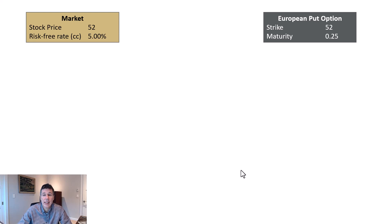The stock price in this market is 52. The risk-free interest rate is 5%, and we're going to try to price a European put option. The strike on the option is 52. The maturity is a quarter of a year. This European put option is a contract that allows us to sell the stock in a quarter of a year for $52.